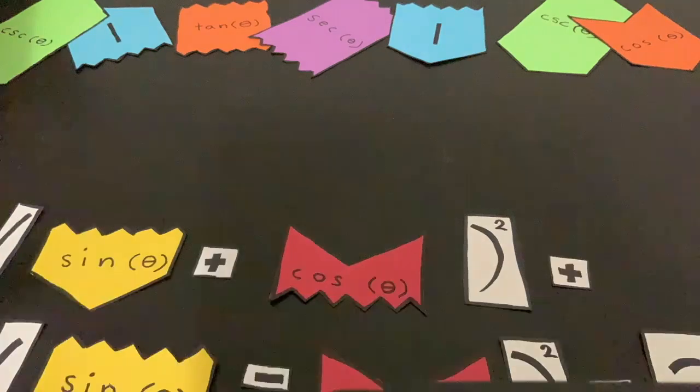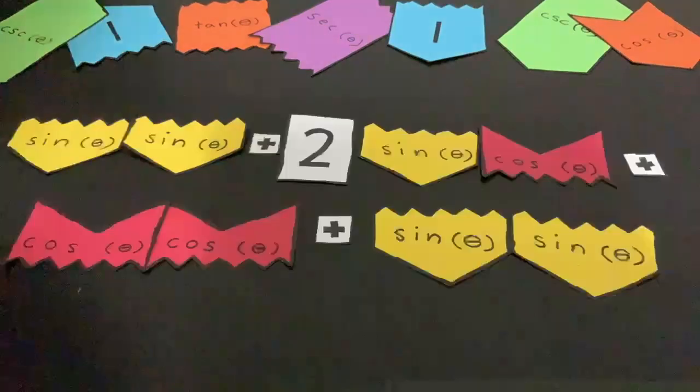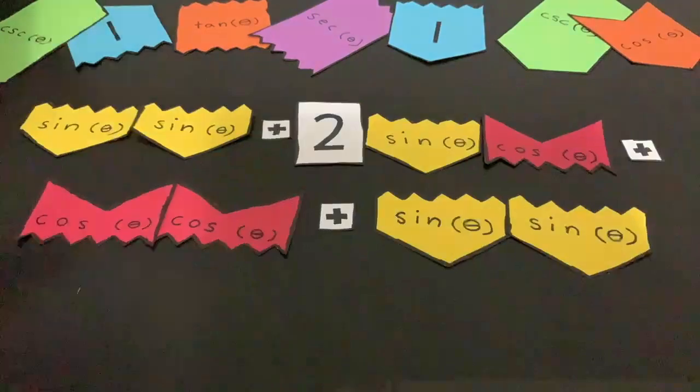The equation you get is sine theta times sine theta, which is also sine squared theta, plus 2 sine theta times cos theta plus cos theta times cos theta. Then on the other parentheses...